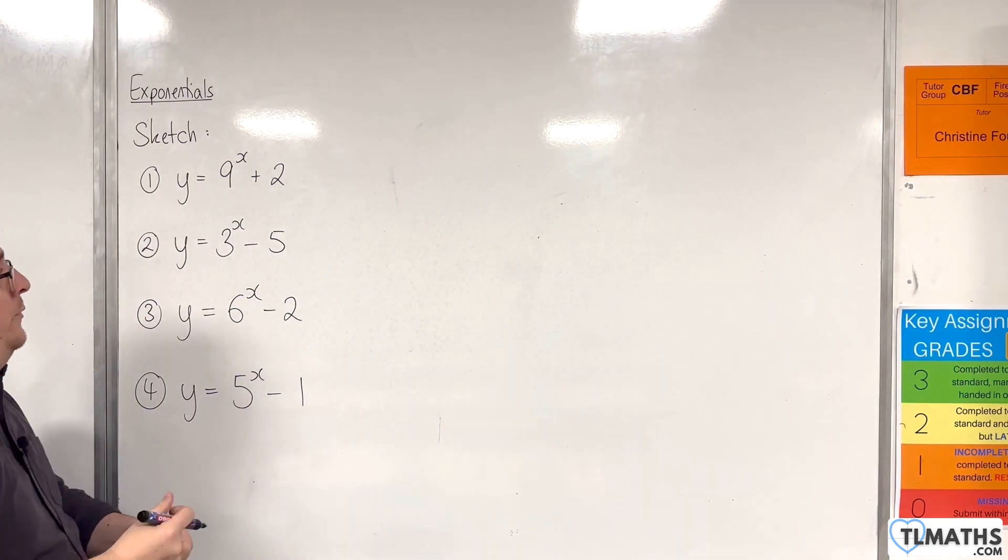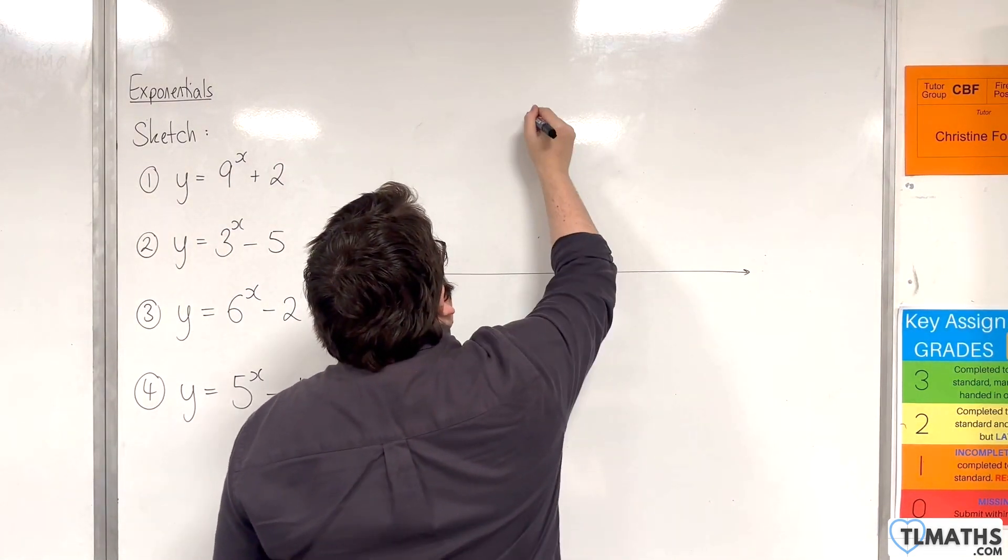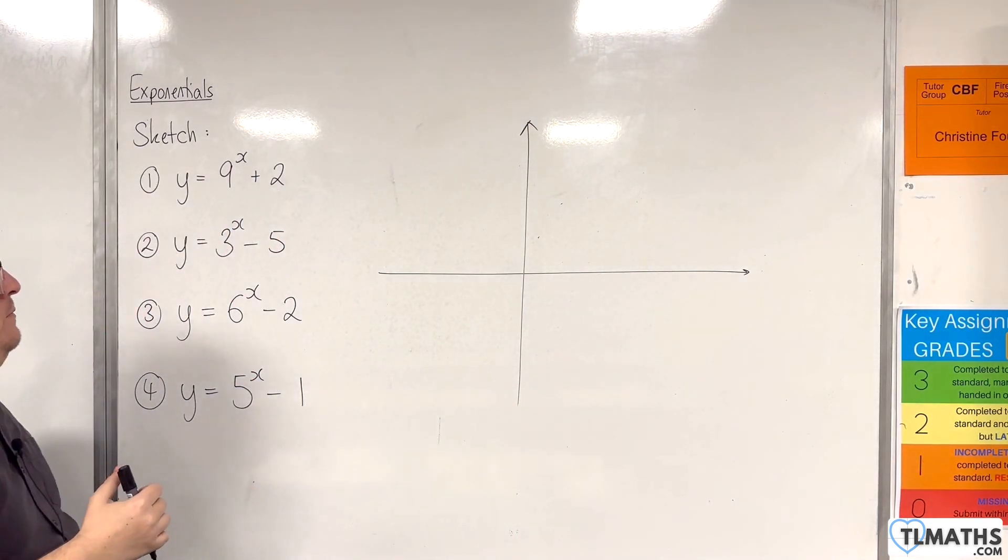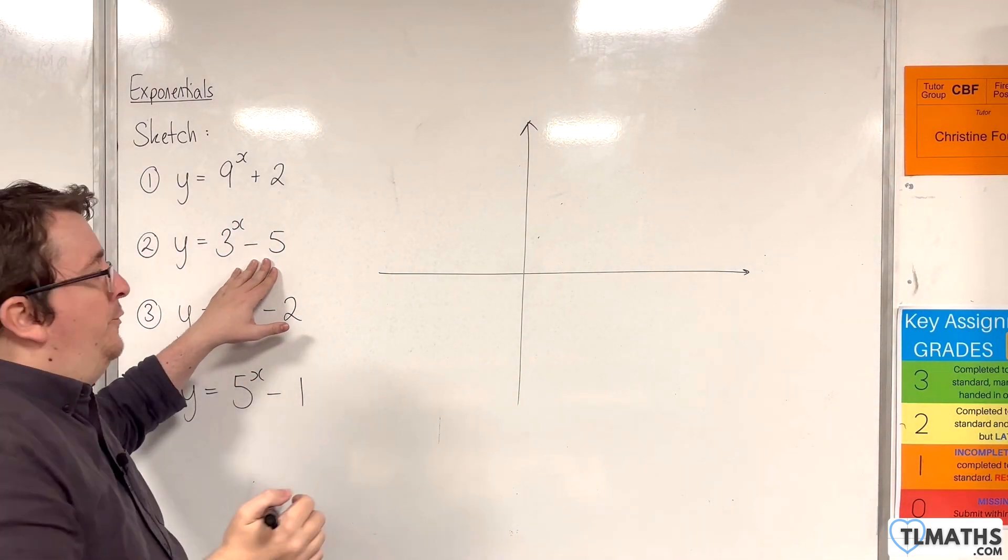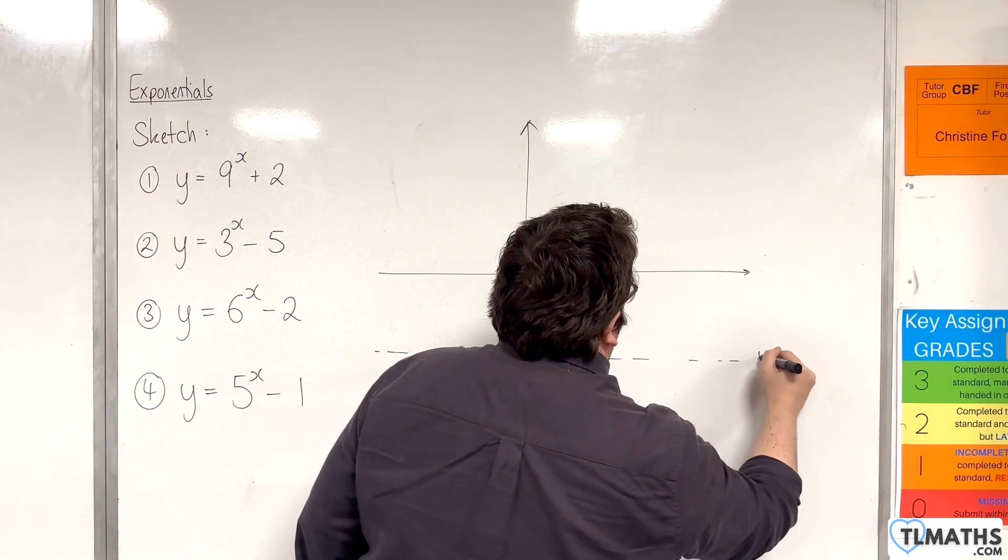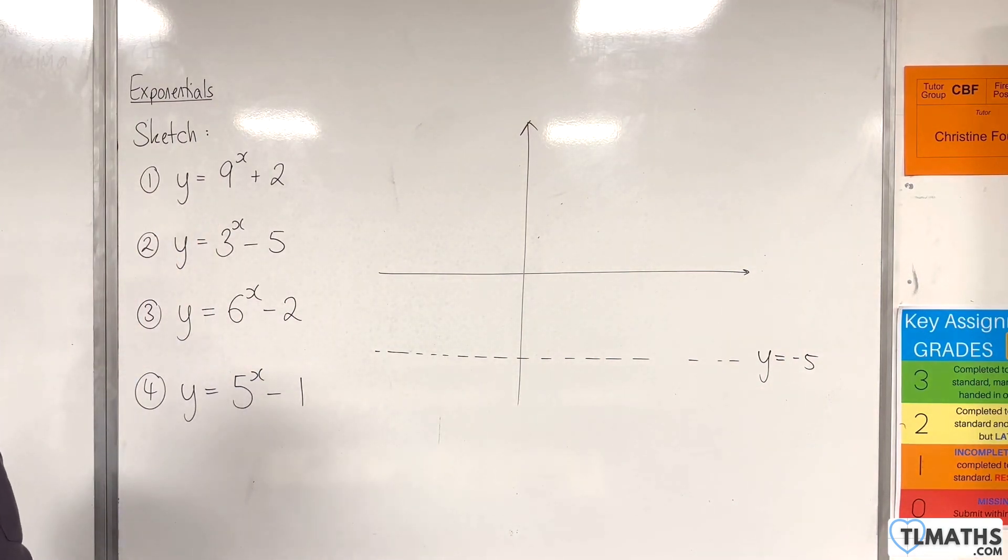Now for the second one, y equals 3 to the x take away 5. The first thing you want to do is draw on your horizontal asymptote, which will be at y equals minus 5. So y equals minus 5.